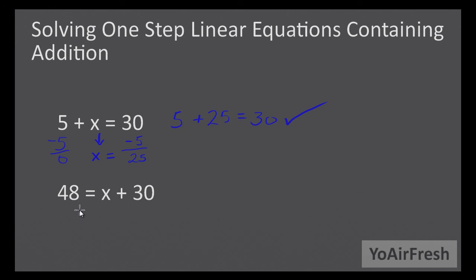Down here, same type of problem, just set up a little differently with different numbers. I'm going to get the x by itself. In order to do that, you're going to want to subtract this 30, equals 0 on this side.